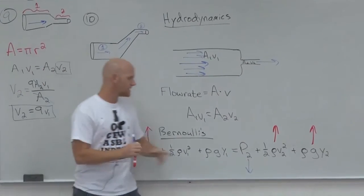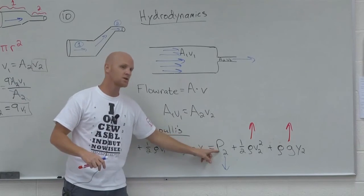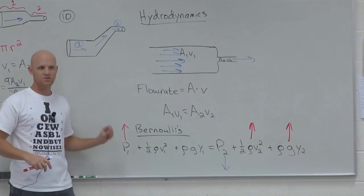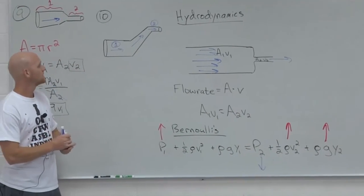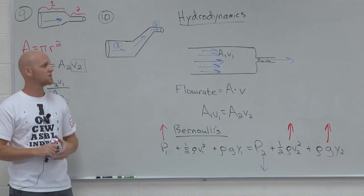if these are both larger than their corresponding terms on the other side, the only way this could be equal is if the pressure on this side's lower than the pressure in region one. Cool. So just purely conceptual question. Kind of reasoning it out using Bernoulli's equation.